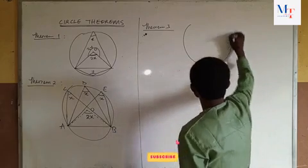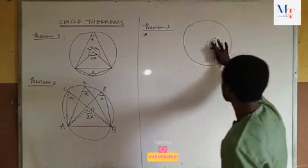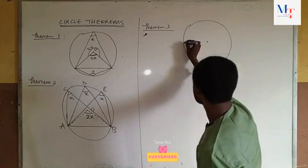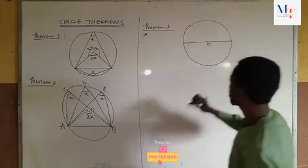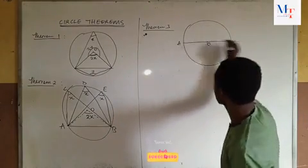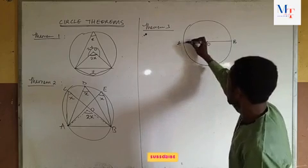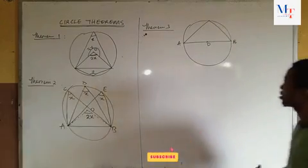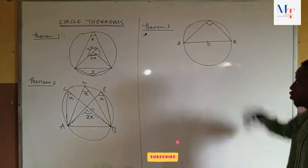We have a circle with center O. A semicircle is formed when we have a diameter — a line that passes through the center of the circle. The angle subtended by this diameter is a right angle, that is 90 degrees. That is theorem 3: the angle in a semicircle is a right angle.